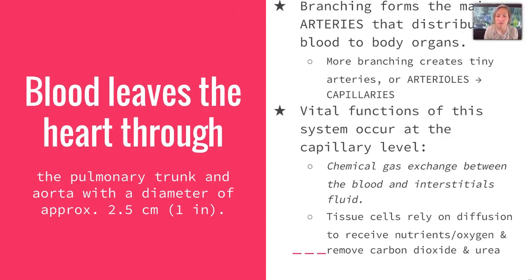Blood leaves the heart through the pulmonary trunk and aorta with a diameter of approximately 2.5 centimeters. From these vessels, they branch to form the major arteries that distribute blood to the body organs. Then you have more branching that creates your tiny arteries or arterioles, and then even smaller, your capillaries. The vital functions of the cardiovascular system occur at the capillary level because they're responsible for gas exchange between the fluids and the blood, and the tissues rely on diffusion to receive nutrients and oxygen and remove waste products.